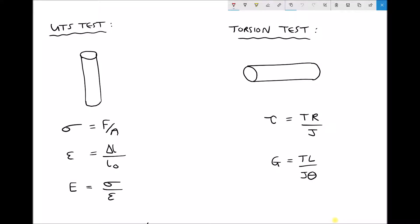In an earlier tutorial we saw how a UTS test can be used to determine a number of different properties of a given material. In particular, we saw how it can be used to find the yield strength, the ultimate tensile strength, and the elastic modulus.